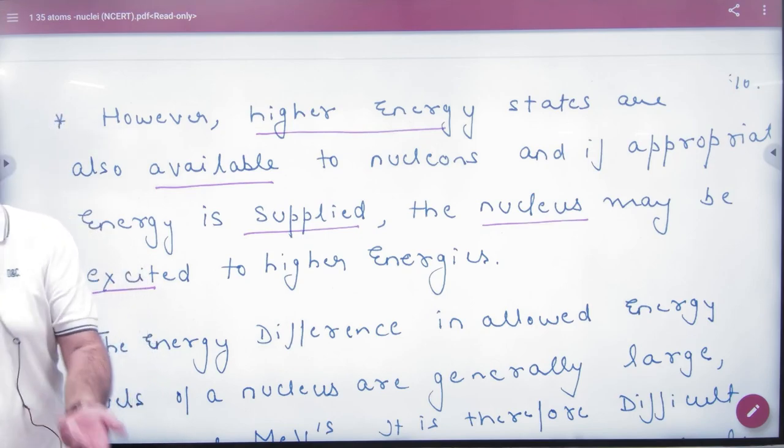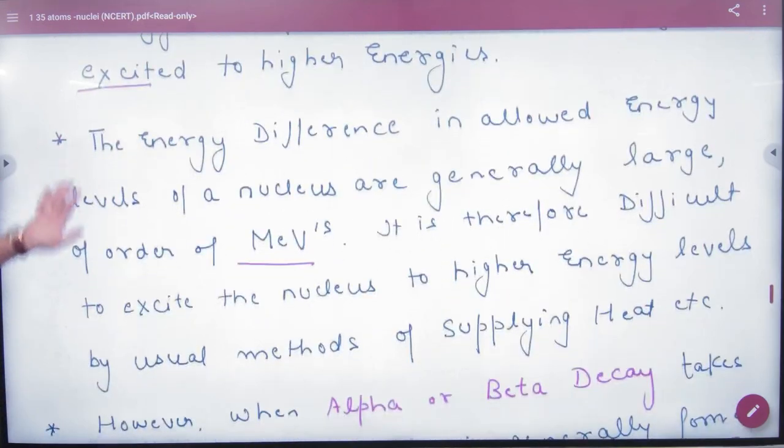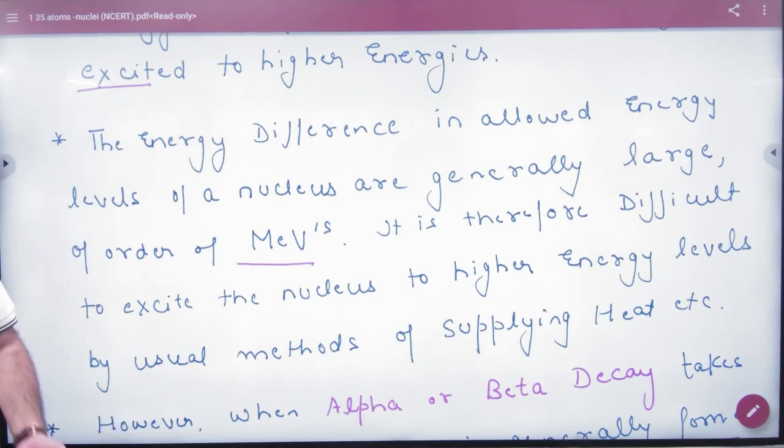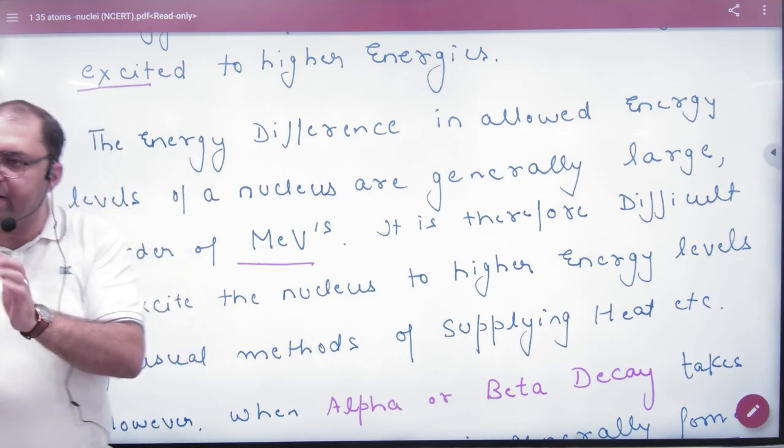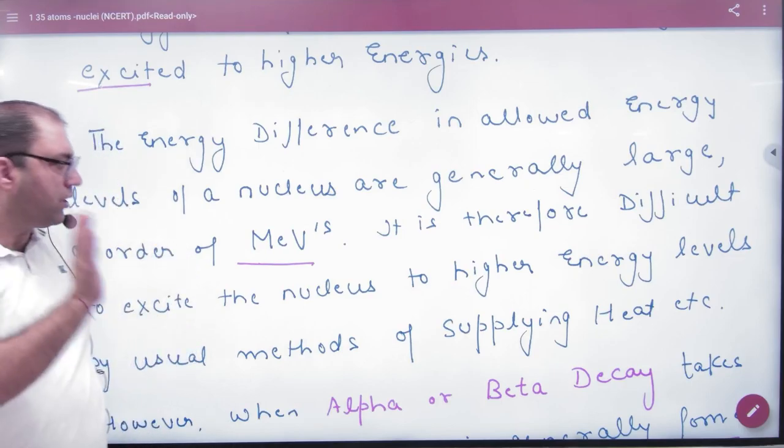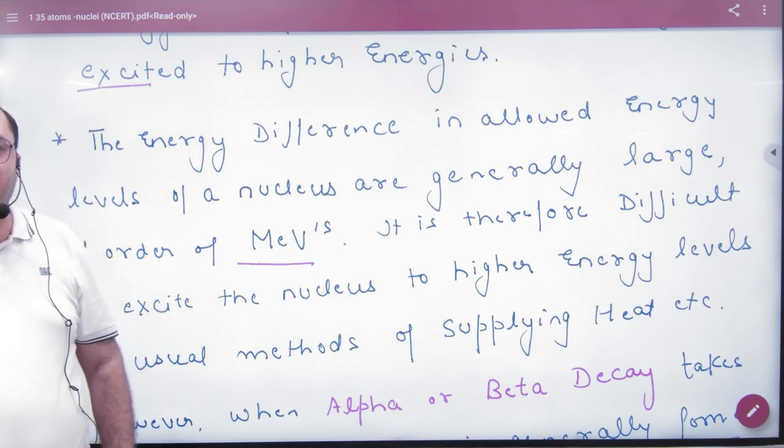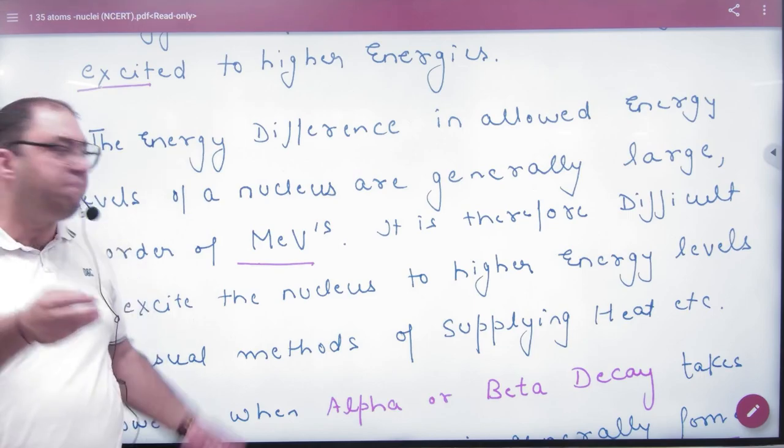This is why the energy differences in the allowed energy levels of a nucleus are generally large. The nucleons can excite to such levels, but they require a lot of energy. Mega electron volts, that means 10^6 electron volts, which is a very big value.